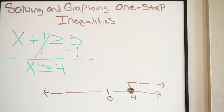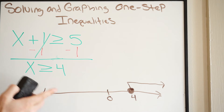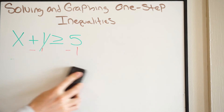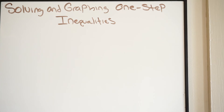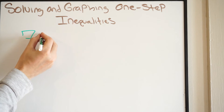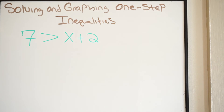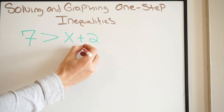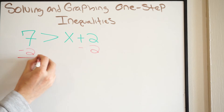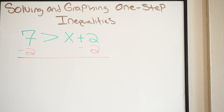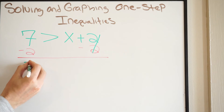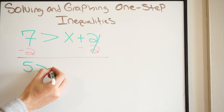Let's do another example. Let's say we have 7 > x + 2. We're going to solve this just like we would an equation, so we're going to minus two on both sides. The twos will cancel, giving us five. Bring down the inequality and the variable: 5 > x.